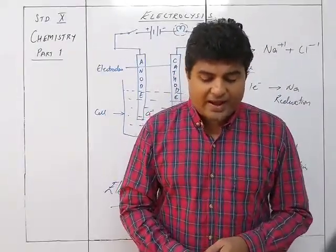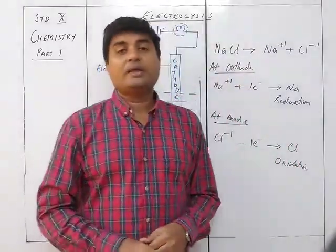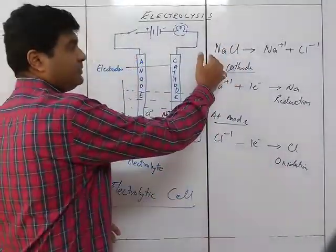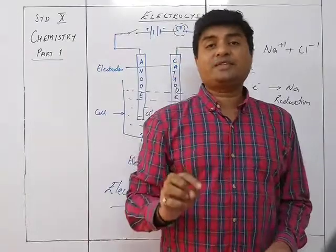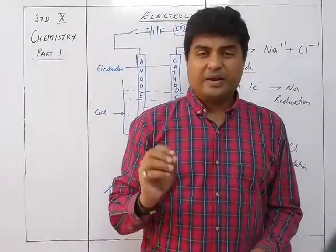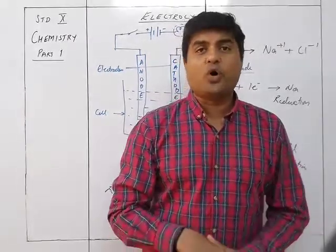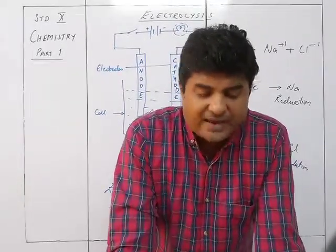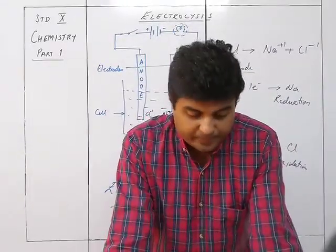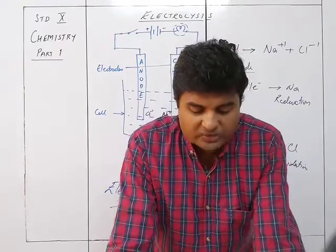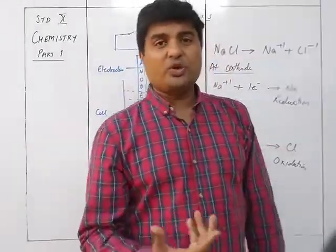The number of positive charges of ions equals the number of negative charges, and thus the solution is in electrolytic equilibrium. The number of positive ions dissociated from a solution equals the number of negative ions dissociated. An equilibrium is also established between the ions produced and the unionized molecules, so there is always an equilibrium during the process of electrolysis.